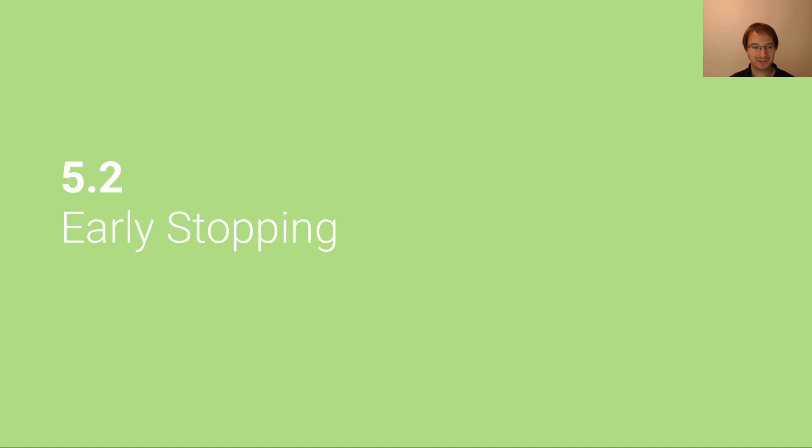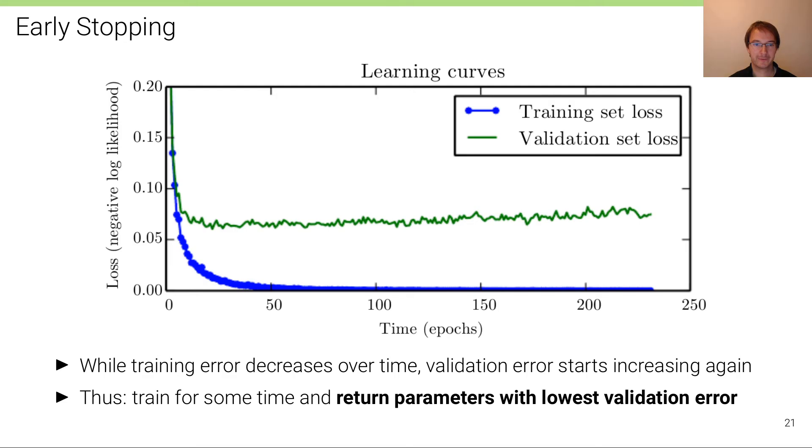In the second unit, we're going to talk about another regularization strategy called early stopping. It's very effective, very simple, computationally very efficient, and used almost always in deep learning.